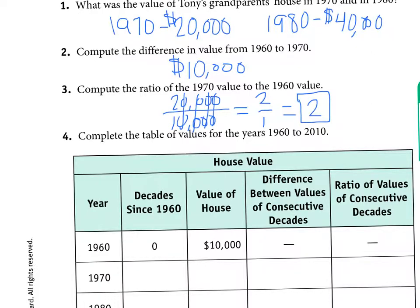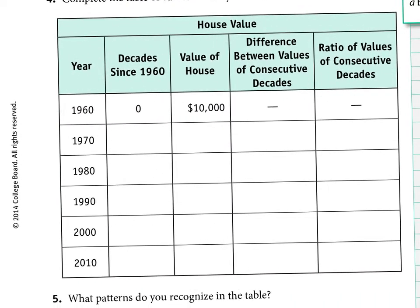That ratio becomes important as we move on. The next piece is to fill in the data table — decades since 1960 versus the value of the house. We count decade zero because in 1960 that's when the house was bought, so zero decades have passed and the value was $10,000. Decade one is 1970 at $20,000. Decade two is 1980 at $40,000.